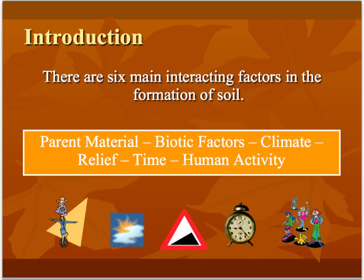The texture, colour and chemical composition of the soil can be very different. These are influenced by six main soil-forming factors: the parent material, the biotic factors involved, the climate of an area, the relief of the land, the amount of time the soil has been there, and quite an important one — the role of human activity. We will go into each of these factors in more detail over the following slides.